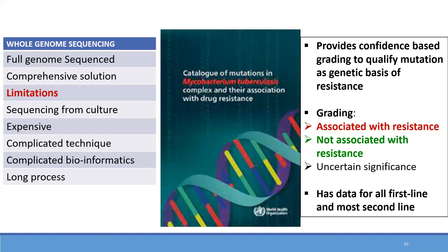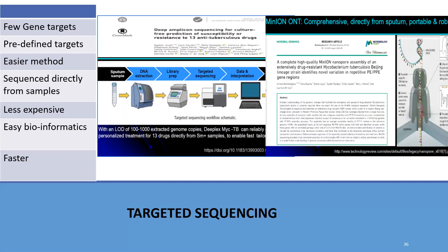Whole genome sequencing provides grading to qualify mutations as a basis of resistance: associated with resistance, not associated with resistance, or uncertain significance. It has data for all first-line and most second-line drugs. Targeted sequencing takes only a few predefined gene targets rather than the complete genome — it is an easier method, can be done directly from samples, has easier bioinformatics, and is faster. The MinION nanopore platform can identify lineage strains and novel mutations. Deep amplicon sequencing is another approach — both MinION and deep amplicon are expensive but have easy bioinformatics and are fast.